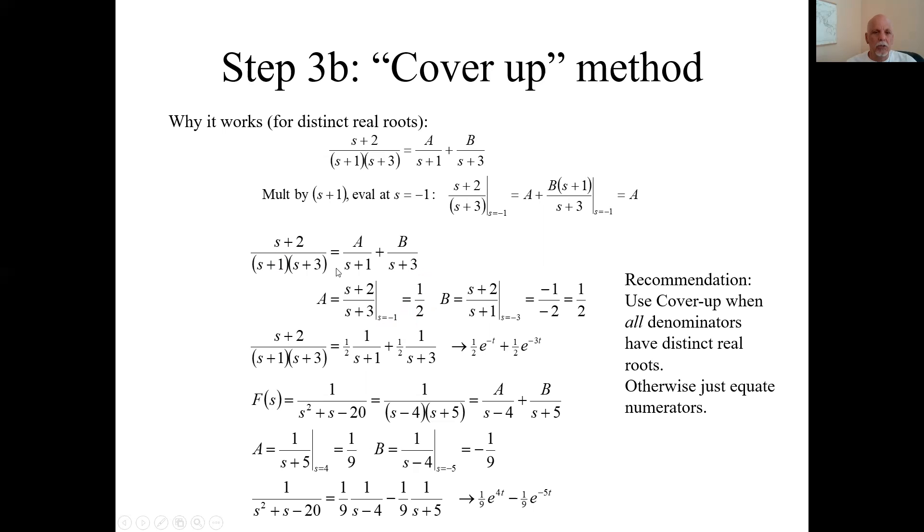B is going to be... There I'm going to cover up the s plus 3 term. I'll have s plus 2 over s plus 1. And I'll evaluate it at minus 3. In that arithmetic, I get minus 1 over minus 2 or a half, which is what we got the other one.